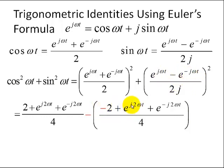Then, we have e to the j 2 omega t, which is the result of squaring this first term. And then here, we have e to the minus j 2 omega t, which results from squaring this term here.